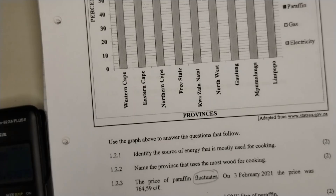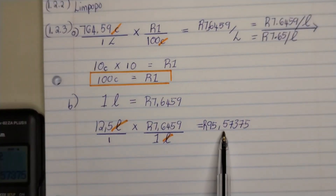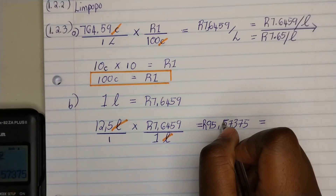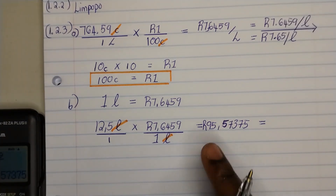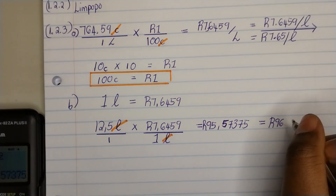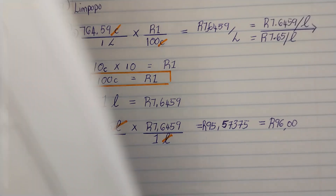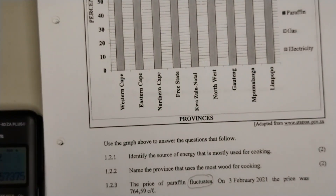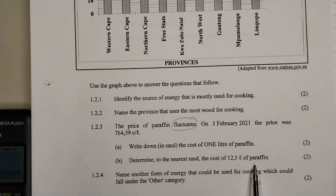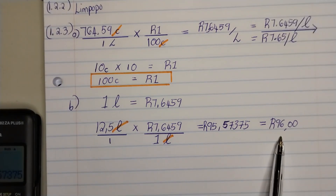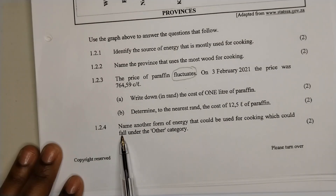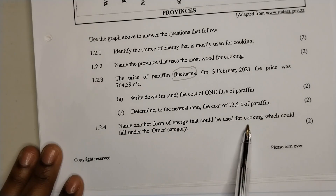Our answer is 95.573 rands, but they're asking us to determine to the nearest rand. We look at the digit after the decimal point — it's a 5 — so we round up. Therefore, the cost of 12.5 liters of paraffin to the nearest rand is R96.